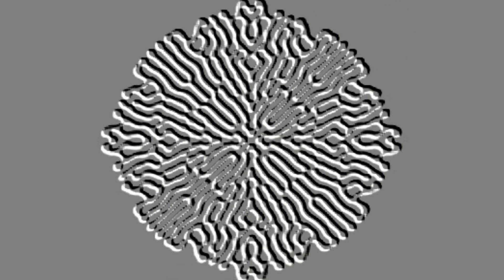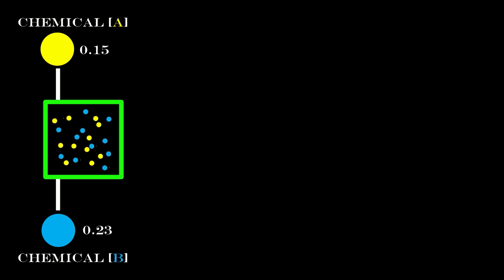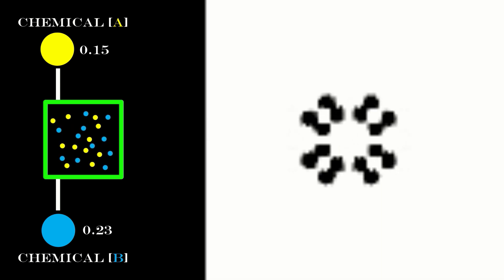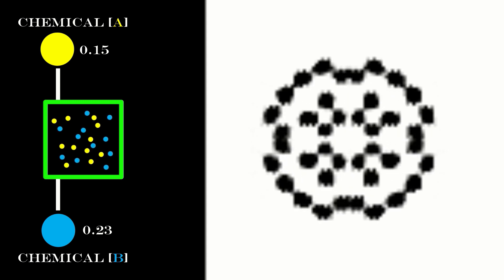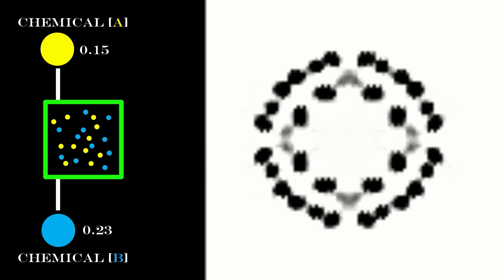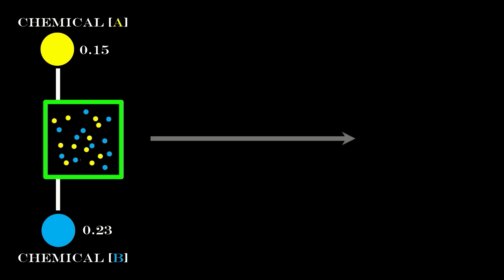The reaction-diffusion system described here involves two general chemicals whose concentration at a given point in space is referred to by variables A and B. If we take this green square to represent a pixel, I can initialise the concentration at that point randomly. There's no simulation of individual molecules — all I'm doing is setting the concentrations of the two chemicals.